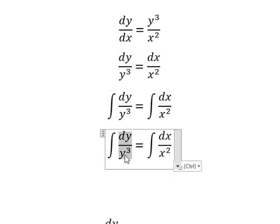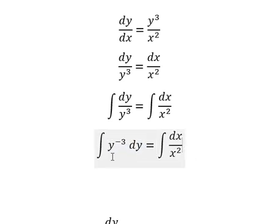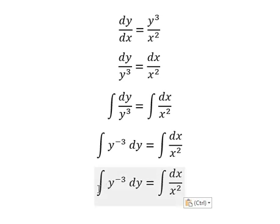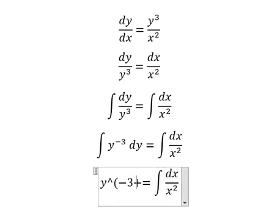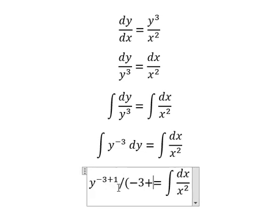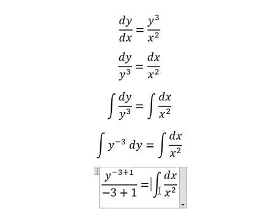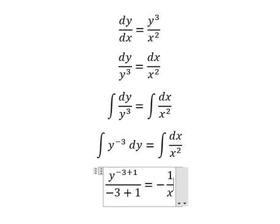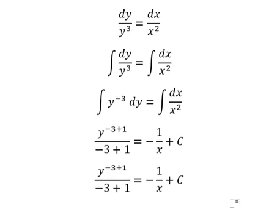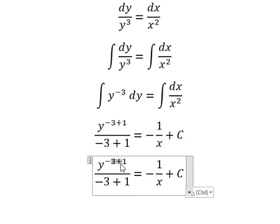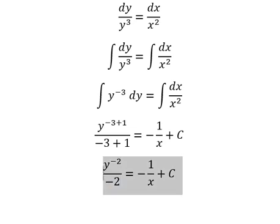So this one we have y to the power of negative three, so this one we have y to the power of negative three plus one, over negative three plus one. This one we have negative one over x, and I will put plus C. This one we have negative two, and that is the final answer.